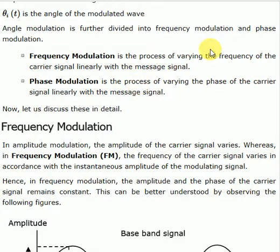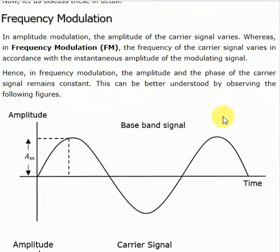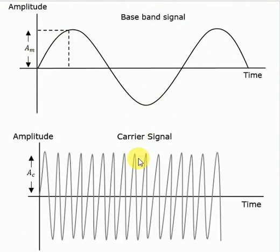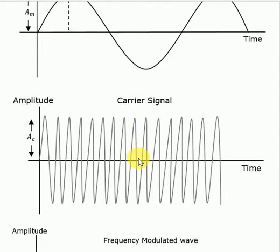Frequency modulation is the process of varying the frequency of the carrier linearly with the message signal. Here is a message signal. Frequency is the parameter of the carrier signal to impose the signal. This is frequency modulation.